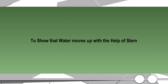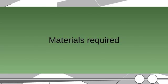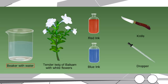To show that water moves up with the help of the stem. Materials required: dropper, beaker with water, tender twig of balsam with white flowers, red ink, blue ink, and knife.